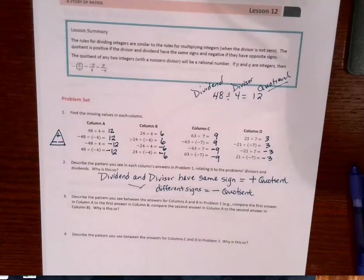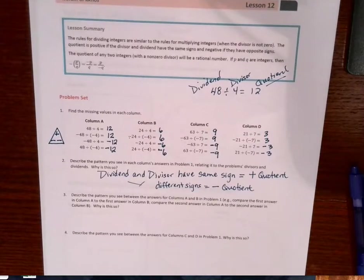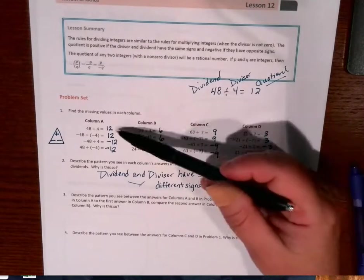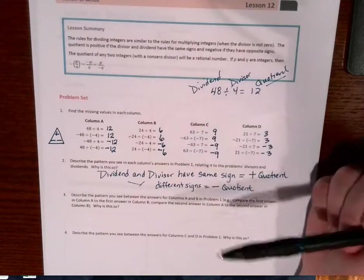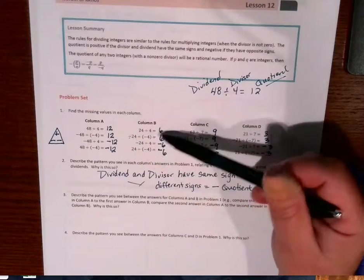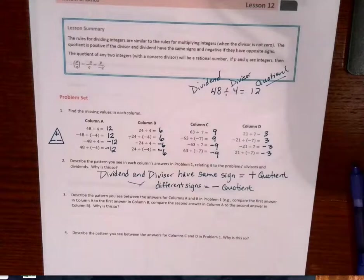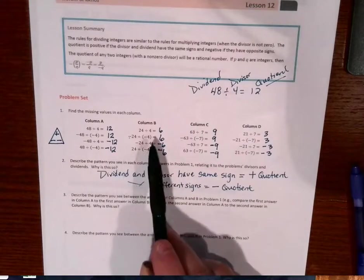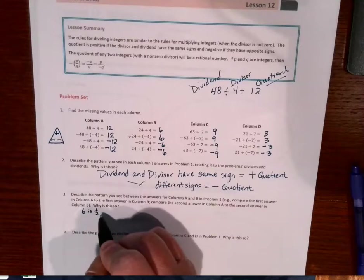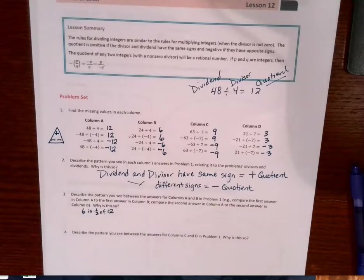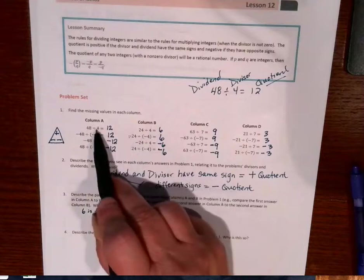Now in this next one, I had to sit and think a few minutes about, well, what are they asking me? Describe the pattern you see between the answers for column A and B. So when I'm looking, I'm noticing positive 12, positive 12, positive 6, positive 6. Well, what do those two have in common? What does this have? What do those have in common? Well, 6 is half of 12? So let's see here. 6 is one half of 12. I'm just writing that down.